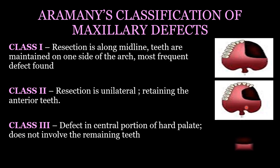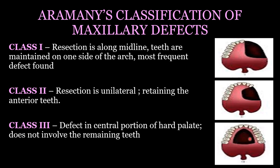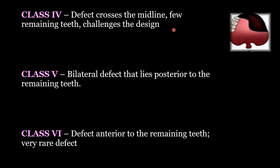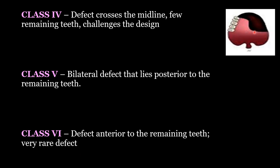Class three: the defect is in the central portion of the hard palate, the anterior teeth are not involved, the design for this is simple, and retention and stabilization are nicely planned in these cases. Class four: the defect crosses the midline, very few remaining teeth are present, which creates a problem for the designing and stability of the definitive obturator.